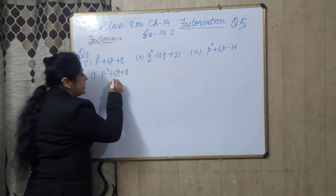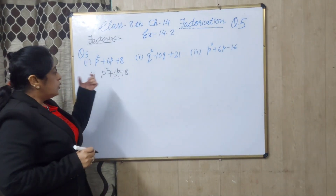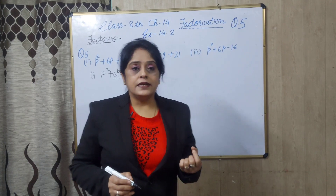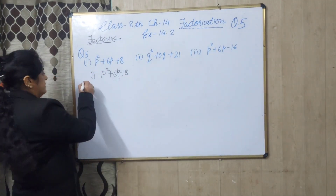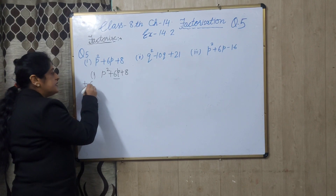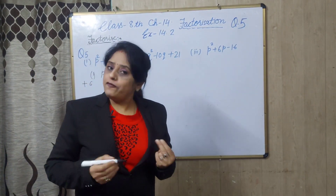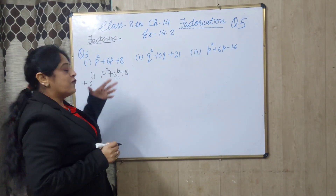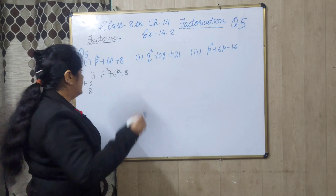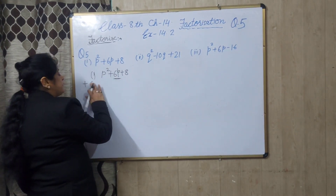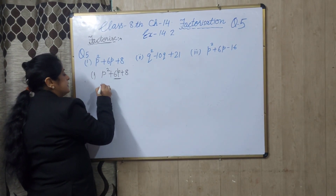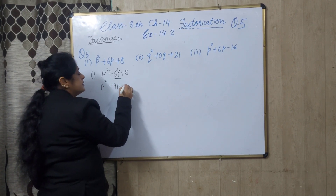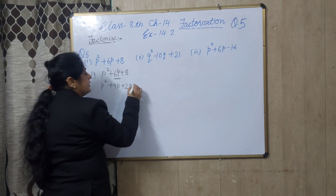This middle term we have to split. You have to think of two numbers which when added give 6, and when multiplied give 8. Have you thought? 4 and 2 — correct! So this middle term we can write as p squared plus 4p plus 2p plus 8.